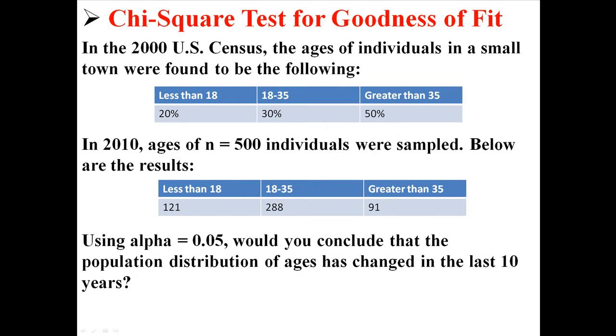So, those are our population proportions. That's the distribution of ages we would expect to find in any given sample. Now, in 2010, the ages of 500 individuals were sampled and below are the results.